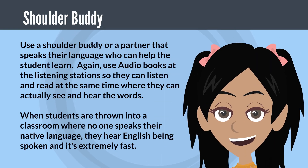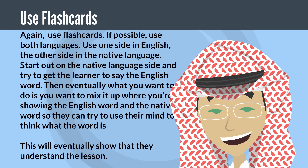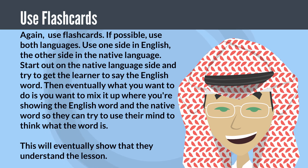Use a shoulder buddy or a partner that speaks their language to help the student learn. Use audio books at the listening station so they can listen and read at the same time, seeing and hearing the words together. When students are thrown into a classroom where no one speaks their native language, they hear English being spoken very fast. Use flashcards — if possible, use both languages. Put English on one side, the native language on the other. Start on the native language side and try to get the learner to say the English word. Eventually mix it up so they see both words and train their mind to think in both languages.